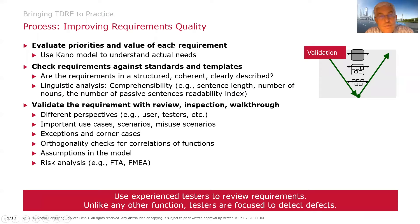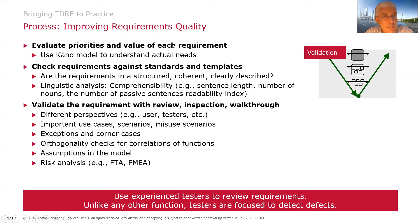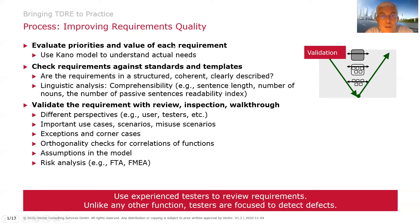The Kano model helps us to distinguish in a triage between base, performance, and excitement factors. We strive for the latter two, because base factors would not really be paid for. This means we also make formal checks — that's verification, doing things right. Verification uses checklists and reviews, following templates like the one introduced in Part 2, and also performing specific analyses such as whether the requirement is comprehensible, such as average sentence length.